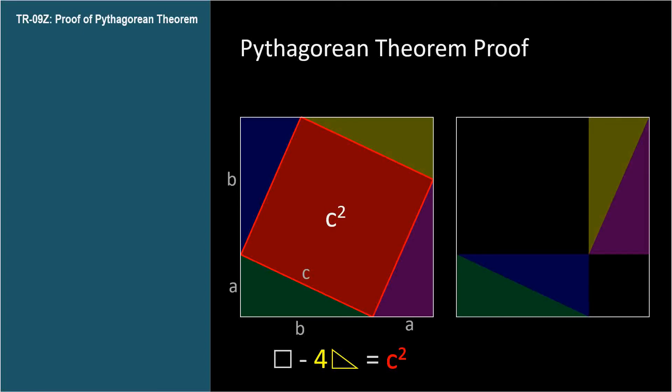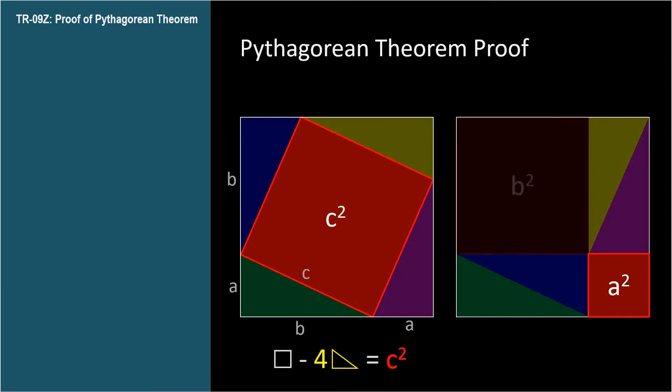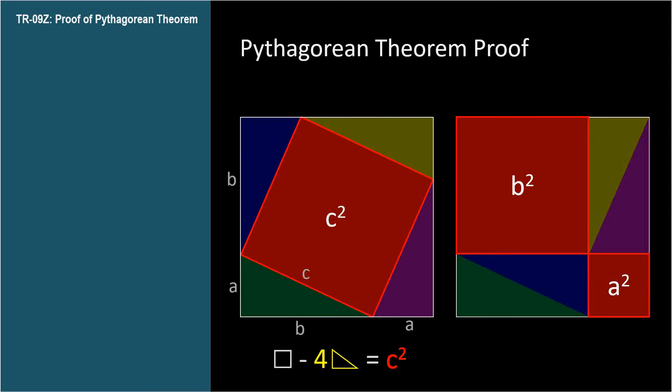Now we have two squares inside the big square. One has sides of length A, so its area is A squared. The other one has sides of length B, so its area is B squared. We can say in symbolic fashion, big square minus four triangles equals A squared plus B squared.